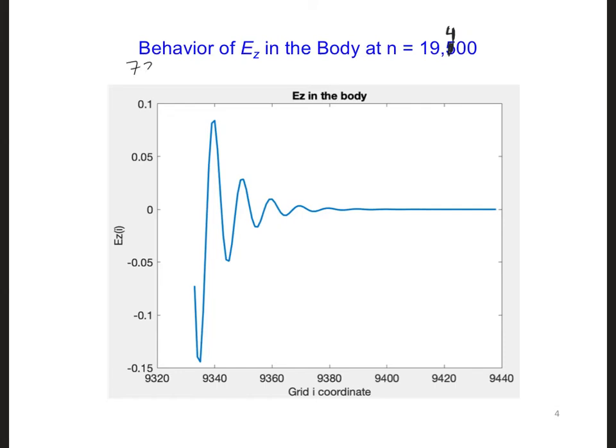72% of the wave should be reflected at the surface of the body, but the body itself, the muscle material that we are using to represent the body, is lossy.